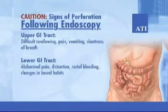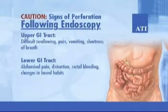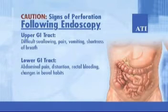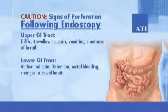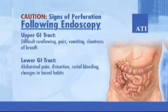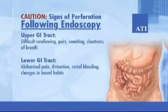Perforation of the upper gastrointestinal tract is signaled by difficulty swallowing, pain in the epigastric area, back or shoulder, vomiting, and shortness of breath. Perforation of the lower gastrointestinal tract is reflected in abdominal pain, distension, rectal bleeding, and changes in bowel elimination.